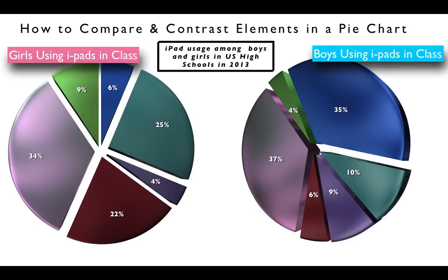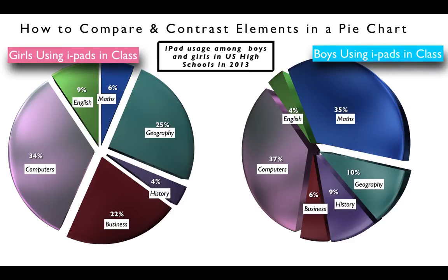The pie chart on the left shows the percentage of girls using iPads in certain classes. These classes include English, Maths, Geography, History, Business, and Computers. The same applies for boys using iPads in the same classes. In the Maths chart, 35% of the boys who attend Maths class use iPads as part of their class, while only 6% of the girls use iPads in class. That means 6% of these girls use iPads and the other 94% do not.